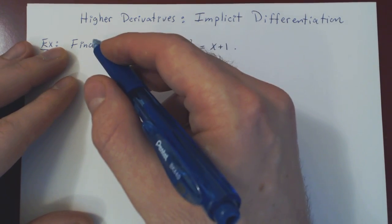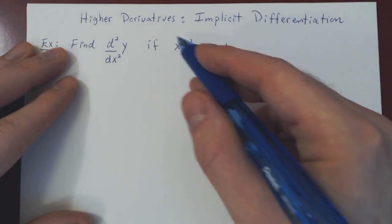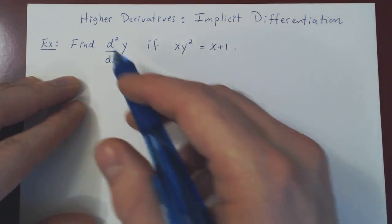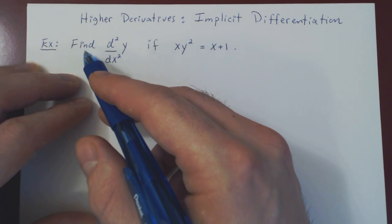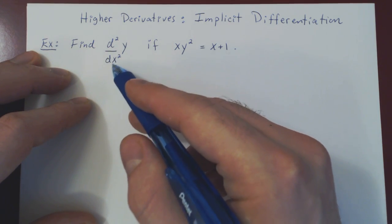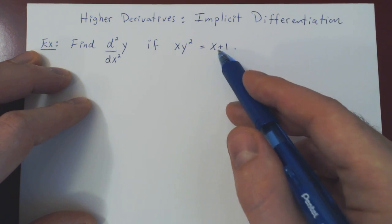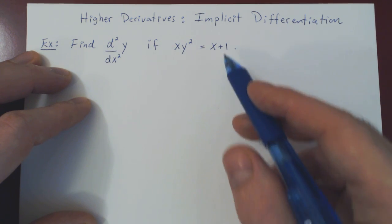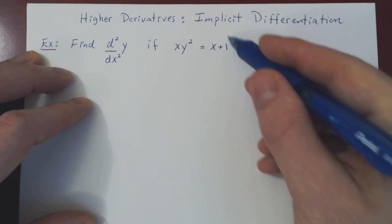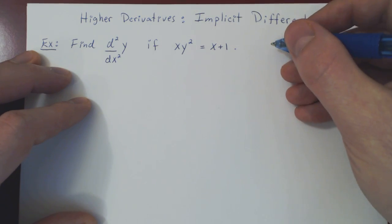In this video we will consider an example of higher derivatives and implicit differentiation. Here's the question: we want to find the second derivative of y with respect to x if xy² equals x plus 1. We know that an equation of this type defines y implicitly as a function of x.